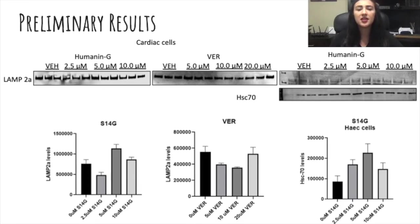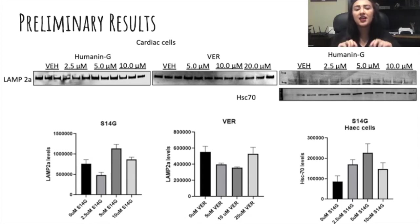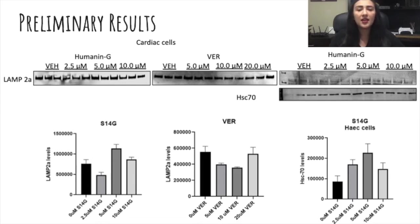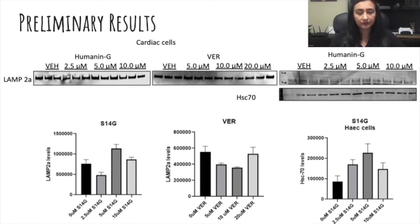So these are our primary results. From the top part, you can see the actual imaging from our nitrocellulose membrane. What this means is that a thicker, darker bar indicates higher levels of protein, and a thin, blurry, light line means there are lower levels of protein. On this side we have our cardiac cells and on the other side we have our endothelial cells. Cardiac cell levels were tested for LAMP2A levels for both the inhibitor and the activator, and endothelial cells were only tested with the activator, but we were able to analyze for both LAMP2A and HSC70.